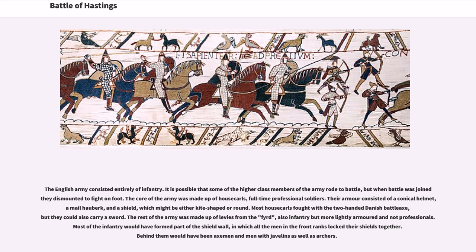The core of the army was made up of Housecarls, full-time professional soldiers. Their armor consisted of a conical helmet, a mail hauberk, and a shield, which might be either kite-shaped or round. Most Housecarls fought with a two-handed Danish battle axe, but they could also carry a sword. The rest of the army was made up of levies from the fyrd, also infantry but more lightly armored and not professionals. Most of the infantry would have formed part of the shield wall, in which all the men in the front ranks locked their shields together. Behind them would have been axemen, men with javelins, and archers.